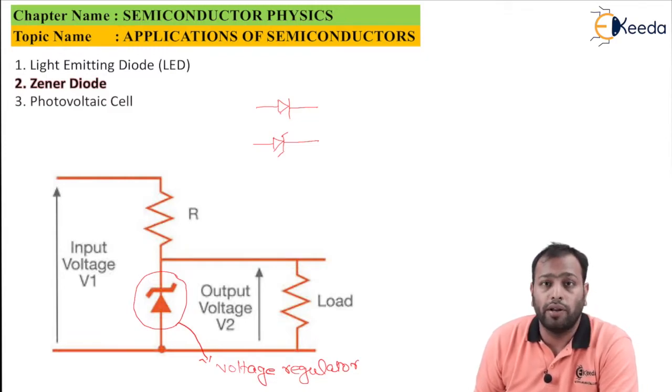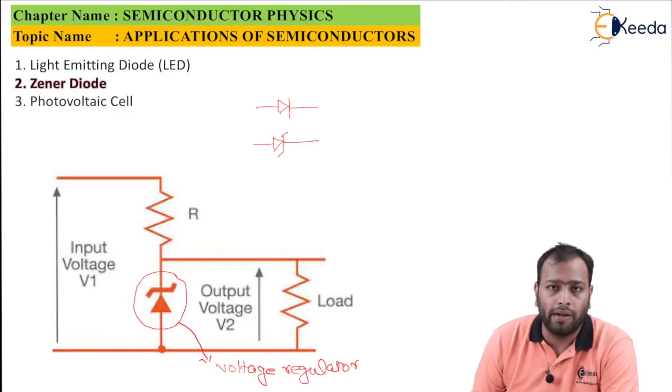If you try to use zener diode in forward bias it will just work as a normal p-n junction diode. This could be a tricky question for your viva. Make sure zener diode if under forward bias works as good as your normal p-n junction diode. But a normal p-n junction diode if reverse biased will have a breakdown voltage which is far away from its forward bias voltage.